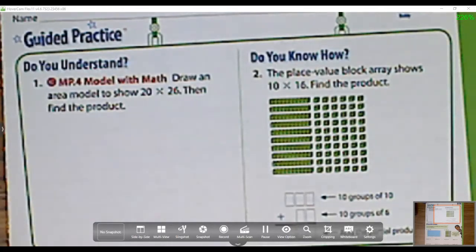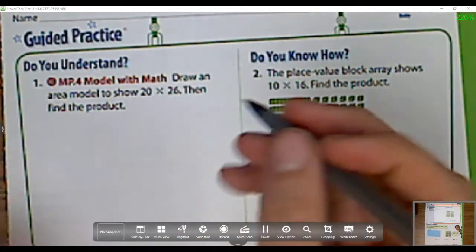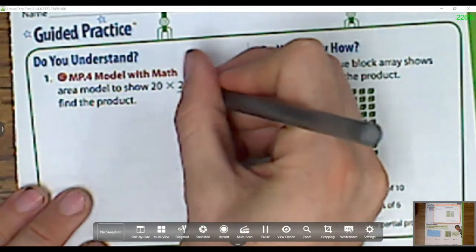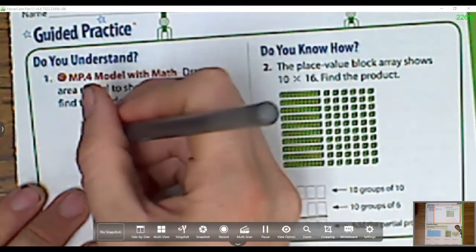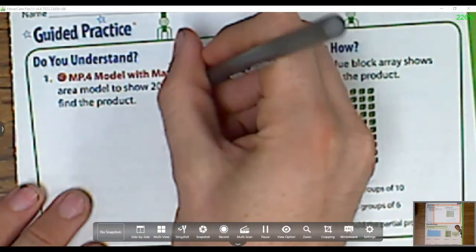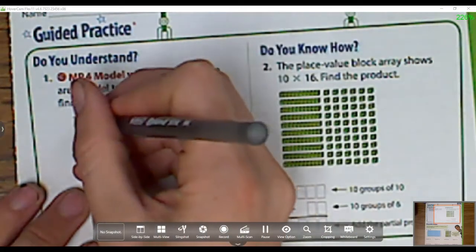Alright guys, so we're on lesson 4-2, which is using models to multiply two-digit numbers by multiples of 10.